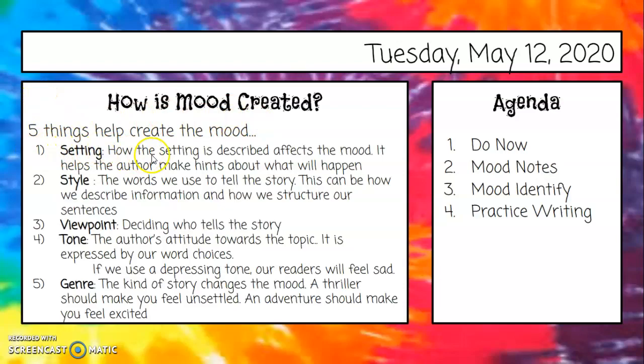How is mood created? There are five things that help create mood. The first thing is the setting - how the setting is described affects the mood; it helps the author make hints about what will happen. So what's our setting in A Long Walk to Water? They're in Africa. And then what's the setting in The Crossover, the basketball book? Sometimes they're at home, sometimes at the gym playing basketball, sometimes at the rec center - all those different places set up the mood.